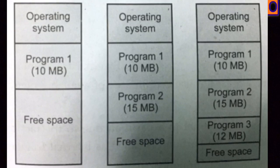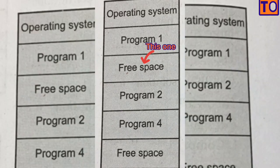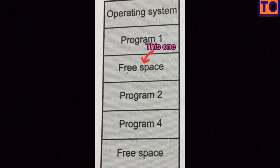Now we have external fragmentation. In this case, we have a non-contiguous memory. We have a block of space, and we have another space, and another space. We have the block of process — the process is located in a free space.